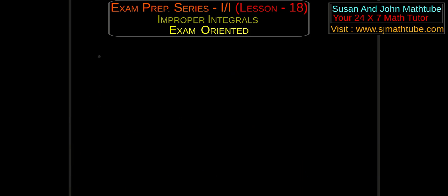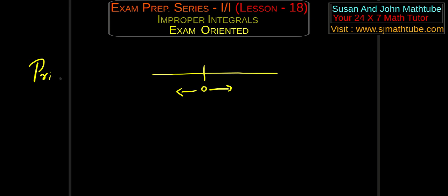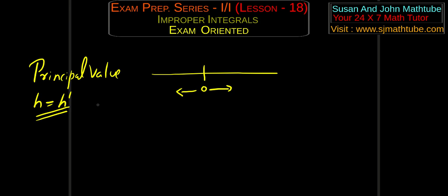Now we go for a special value. What we do is, we try to erase equal distance from both sides. This special case is called the principal value, because in the examination they might ask: evaluate the principal value if the general value does not exist. So for the principal value, all you have to do is put h equal to h prime. Students who don't like logic, just put h equal to h prime. That is why I called this equation 1 — so we can plug in that value.